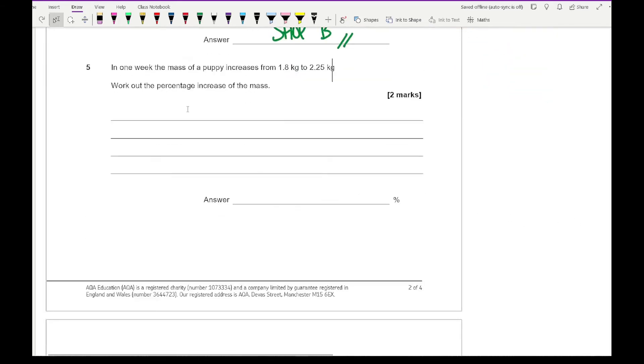Question five says in one week the mass of a puppy increases from 1.8 kilograms to 2.25 kilograms. Work out the percentage increase of the mass. For percentage change the formula is the difference divided by the original multiplied by 100. We need to work out the difference between the two weights.